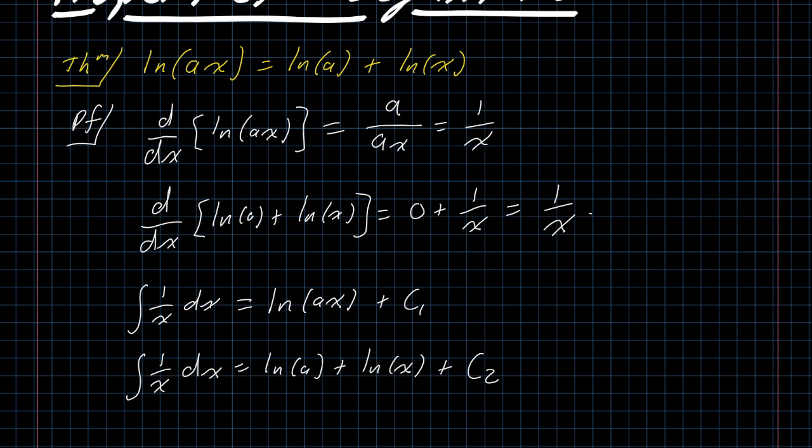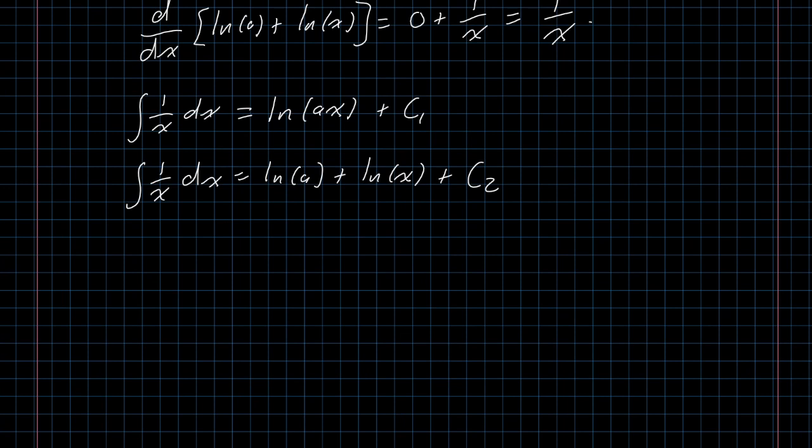But they have to exist, and they have to be related. We know that this is the case because they are both the antiderivative of 1 over x. They're both the indefinite integral, and you can't have two different possible answers for the indefinite integral, but you can certainly have two different ways of writing it.